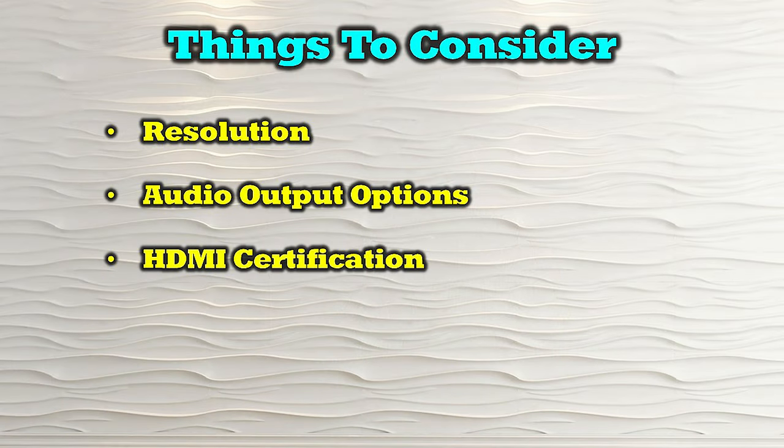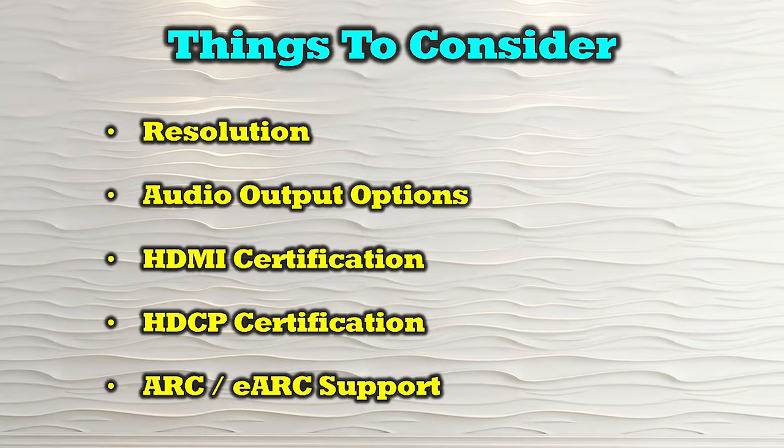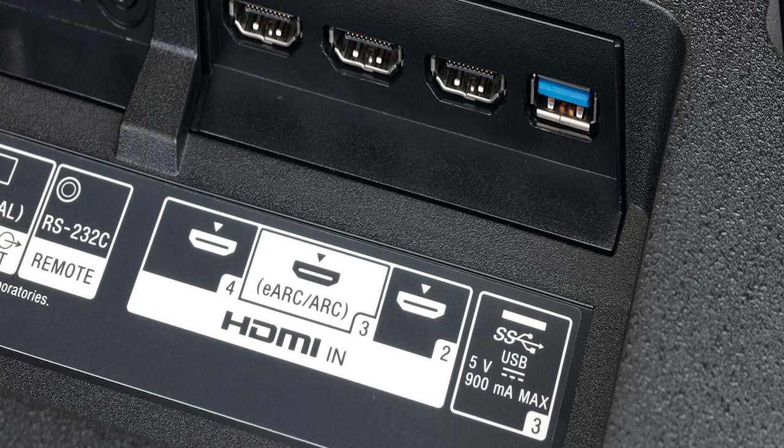Another important consideration is HDMI certification — you'll want the product to be at least HDMI 2.0 compliant, because there are advanced functionalities built into the latest version of HDMI that you'll want to take advantage of. HDCP certification is important as well; the product should be at least HDCP 2.2, which controls copy protection, and having the latest version means you can play a wider range of media content. Finally, ARC and eARC certification matters because audio standards have evolved and ARC and eARC are common on most newer sound bars and digital sound systems, so finding a product that supports them will make that connection incredibly easy.